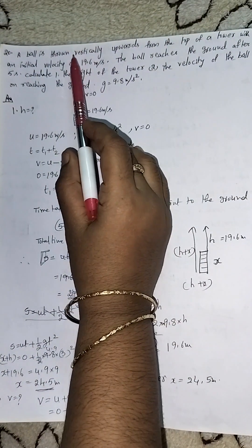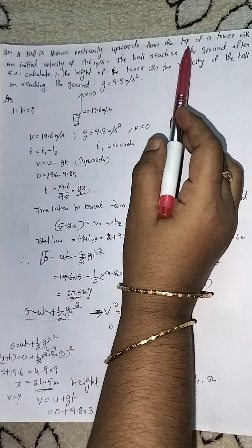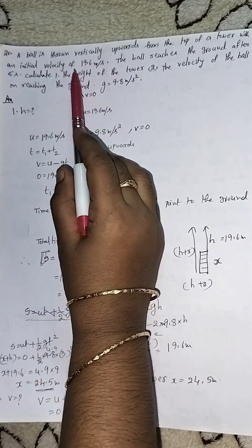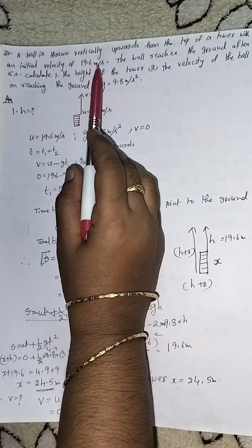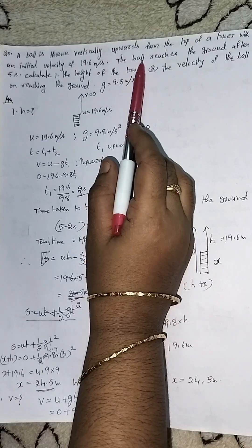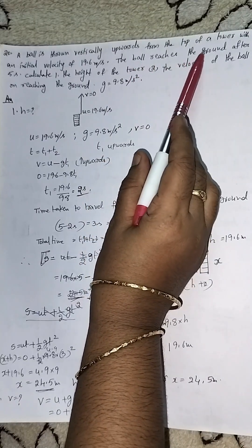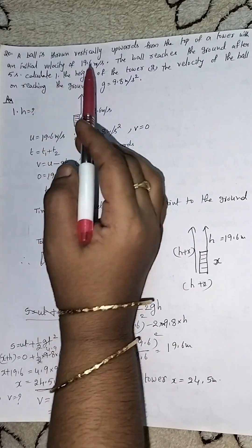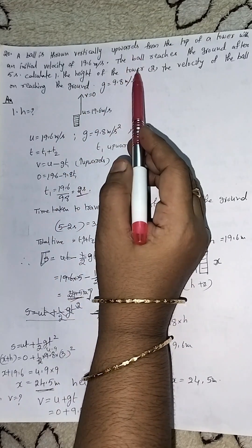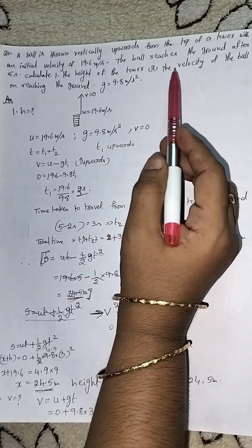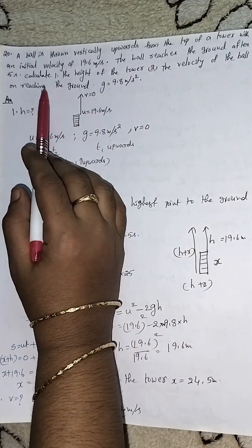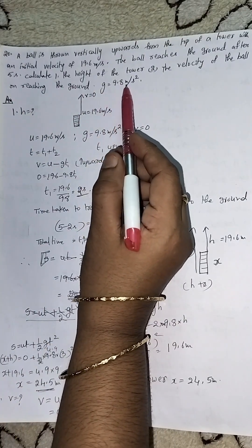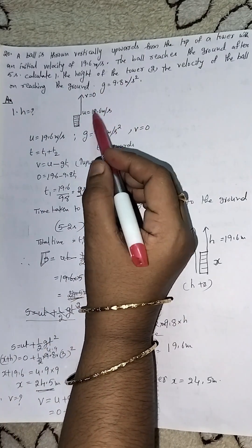A ball is thrown vertically upwards from the top of a tower with an initial velocity of 19.6 meters per second. The ball reaches the ground after 5 seconds. Calculate the height of the tower, and the velocity of the ball on reaching the ground. Given: g = 9.8 meters per second squared.